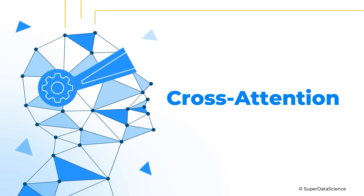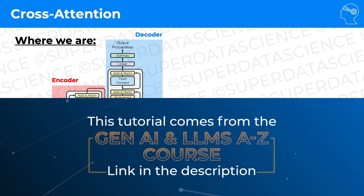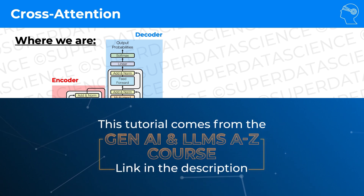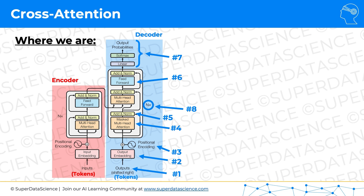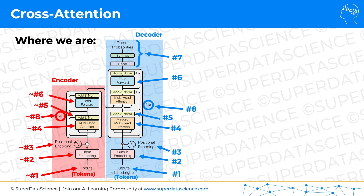Hello and welcome back. Today we're talking about cross-attention. Here's our transformer architecture and we've talked in depth about the components of the decoder. Now we're going to talk about the combined architecture. There are a few new elements, but the elements of the encoder are mostly similar to the elements of the decoder, so we don't really need to cover anything new. Today we're going to focus on the one part that is brand new and that we haven't talked about before: cross-attention.